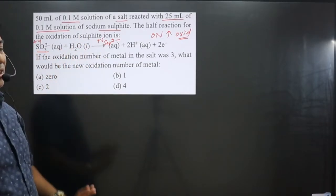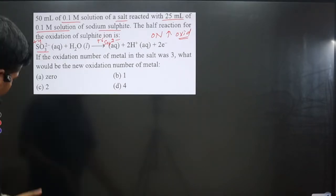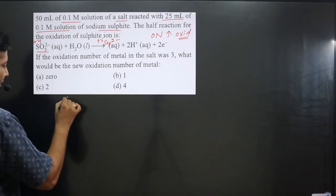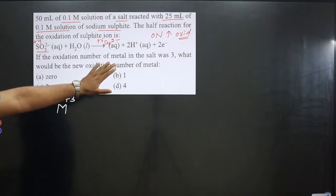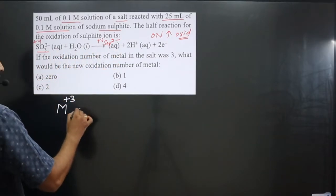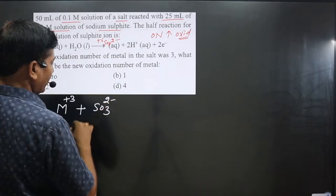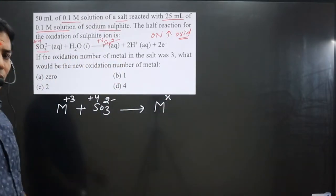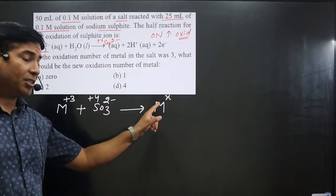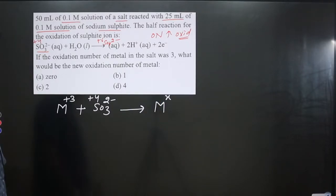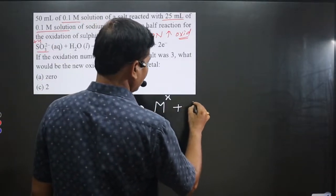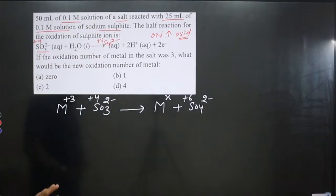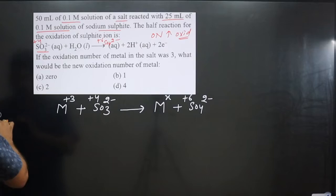The sulfite ion is reacting with the salt in which the metal is present in the +3 oxidation state. We write the equation: the metal M is present in +3 oxidation number, reacting with sulfite ion (SO3 2−) where sulfur is in +4. On the product side, the metal converts to an unknown oxidation state x, and sulfite converts to sulfate (SO4 2−) where sulfur is in +6.